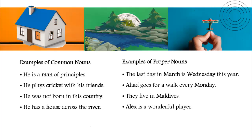'They live in Maldives. Alex is a wonderful player.' Maldives is the unique name of a specific country and Alex is the name of a specific person, which makes both of these words proper nouns. An easy way to spot proper nouns is the first letter of that word — if it's capitalized, it's a proper noun. You can see that the first letter of all the proper nouns is capital in these examples.